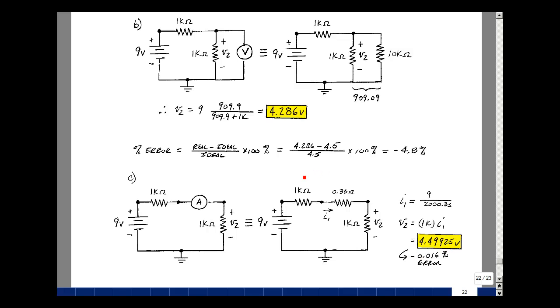If you go back and use the same error formula you'll find that the error is about a minus 0.016%. So much less error by using an ammeter instead of a voltmeter. These are some of the problems with measurement. And this is supplemental problem 223.